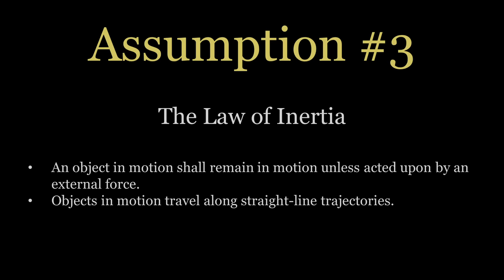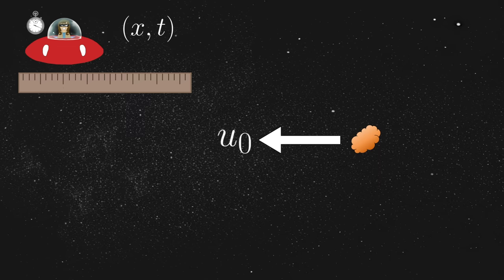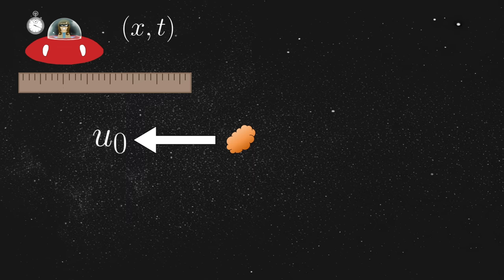To begin, imagine a piece of floating space rock that happens to move past Annie's spaceship. From her point of view, she observes the rock casually floating on by with some constant velocity in accordance with the law of inertia. For convenience, let's call this velocity u sub 0, just to avoid any confusion with Jim's relative velocity, v.